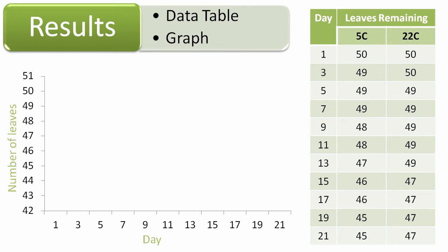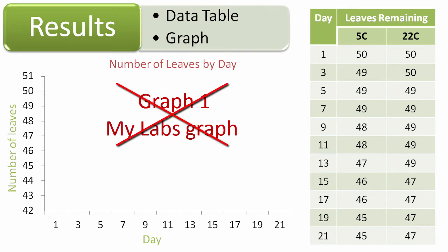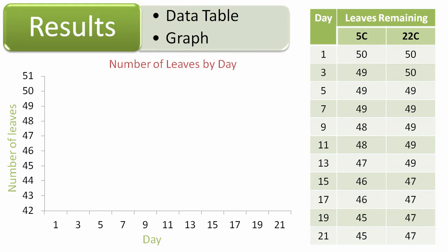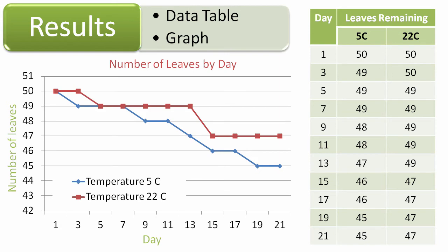On the left we have a graph. We're going to label our y-axis as the number of leaves and our x-axis as the days. We need a title: 'Number of Leaves by Day' — a simple title that tells us exactly what we're looking at. An unacceptable title would be 'Graph Number One' or 'My Lab's Graph' — these don't tell us anything about what we need to know. Once we have our axes, we're going to graph our data. The first set at 5 degrees Celsius is graphed in blue, and we compare it with 22 degrees Celsius graphed in red.